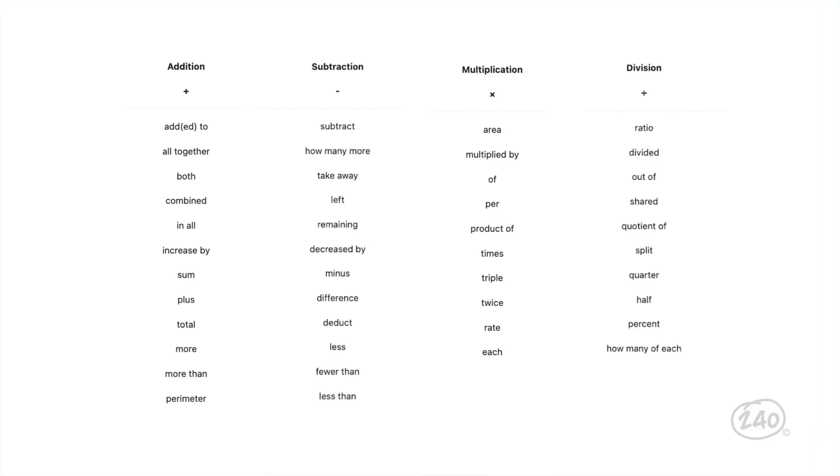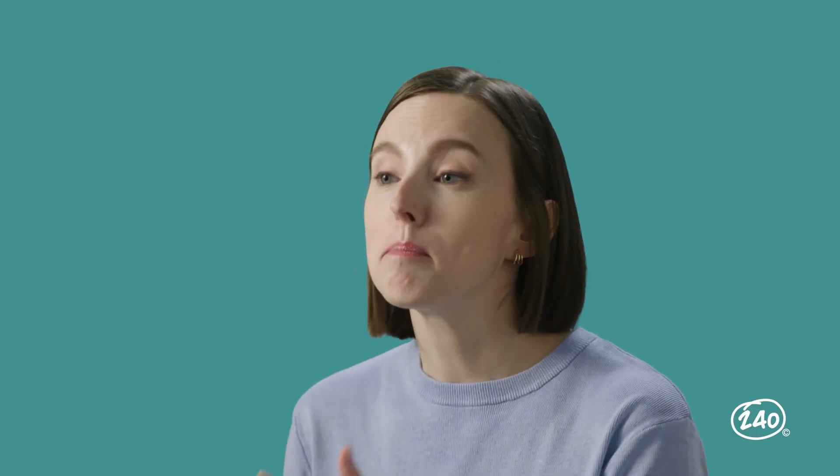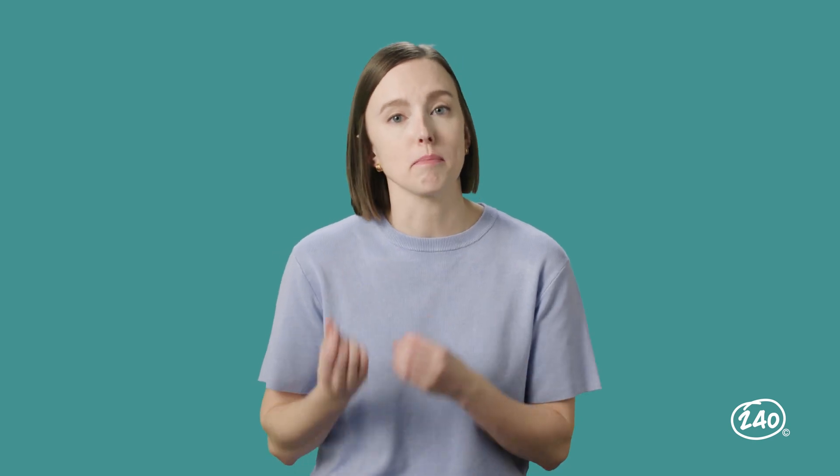Here's a chart with some keywords and the operation they're most often associated with. Addition is associated with words and phrases like altogether, combined, and in all. Subtraction is associated with words and phrases like take away, decrease, and fewer than. With multiplication, we see area, rate, and twice, among others. And with division, we see words like ratio, quarter, and percent. Hey, let's connect this back to the order of operations. A general strategy when translating from verbal to symbolic is to slowly translate each phrase, then recombine them, checking for parentheses and order of operations issues.